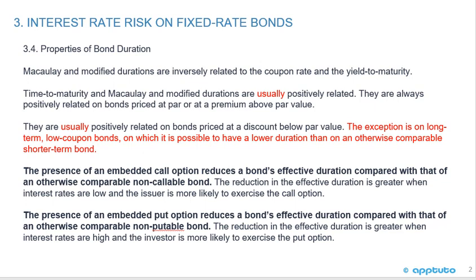The presence of an embedded call option reduces a bond's effective duration compared with that of an otherwise comparable non-callable bond. The reduction in effective duration is greater when interest rates are low and the issuer is more likely to exercise the call option.